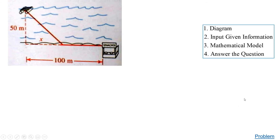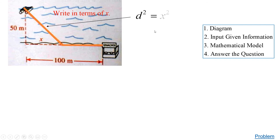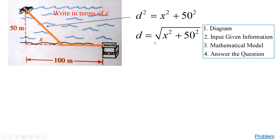The swimming distance (hypotenuse) is root(x² plus 50²) by the Pythagorean theorem. The running distance along the beach is 100 minus x. Using time equals distance over rate: swimming time is root(x² plus 2500) divided by 1, and running time is (100 minus x) divided by 3.